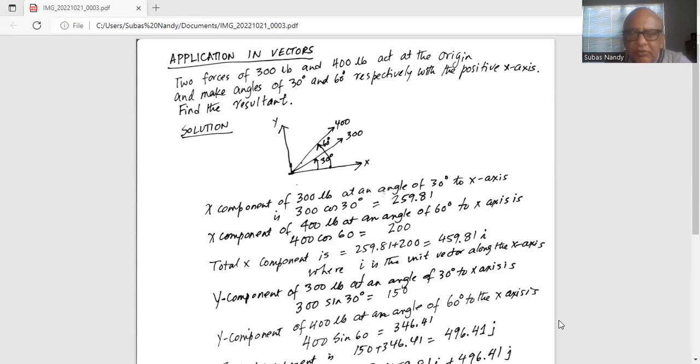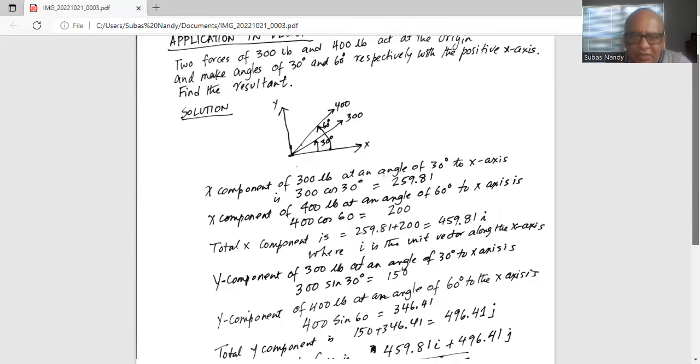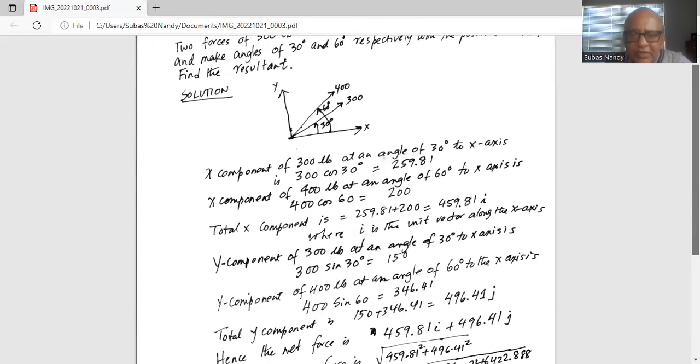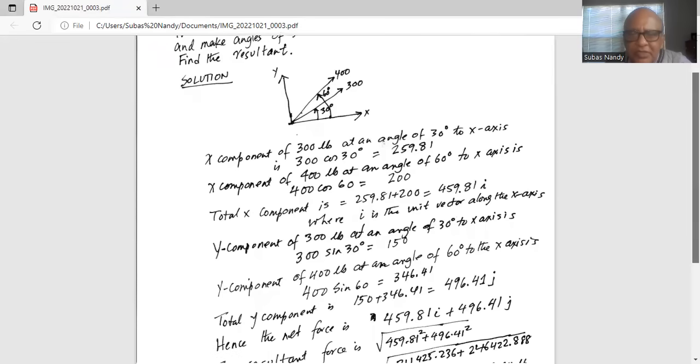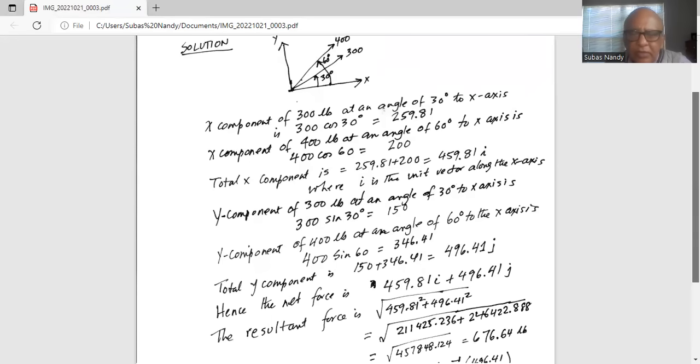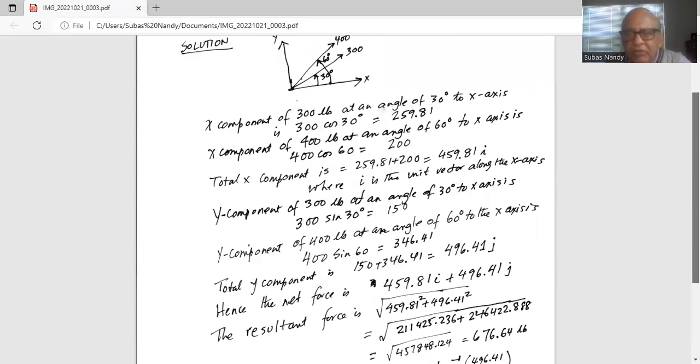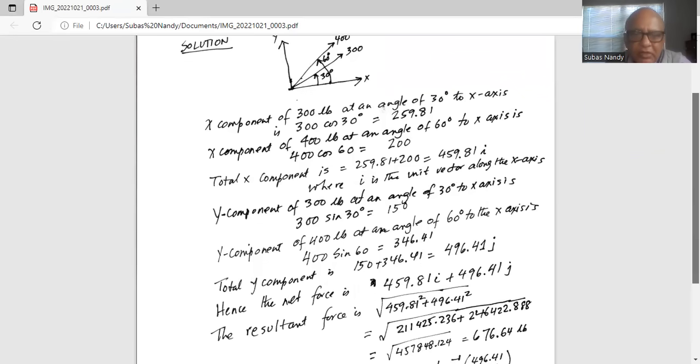The y component of the 300 pounds at an angle of 30 degrees to the x-axis is 300 sine 30, which is 150. The y component of the 400 pounds acting at an angle of 60 degrees to the x-axis is 400 sine 60, which is 346.41. The total y component of the two forces is 150 plus 346.41, which is 496.41j, where j is the unit vector in the y direction.